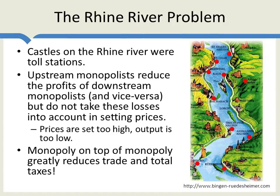Of course, the downstream monopolists are actually in the same situation. The more they charge, the fewer people want to come down the river to begin with, and they charge a high price as well, not taking into account the fact that this is going to reduce the profits of the other prince further up the river. So the fact that there are multiple monopolists means that prices are set too high and output is too low. And I don't just mean too high from the point of view of consumers — prices are actually too high from the point of view of the monopolists taken as a group.